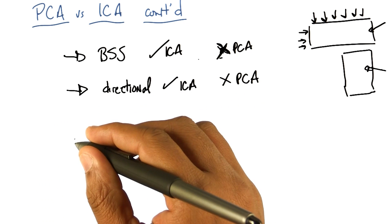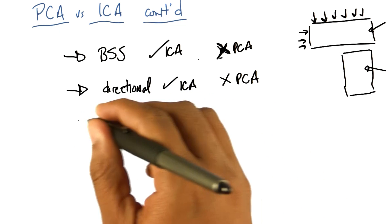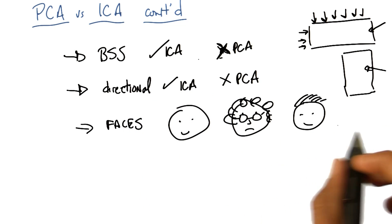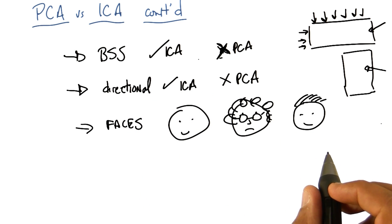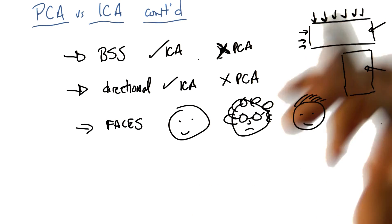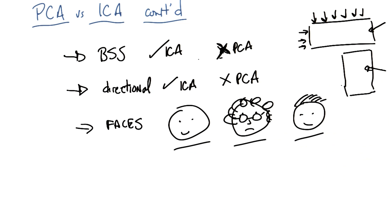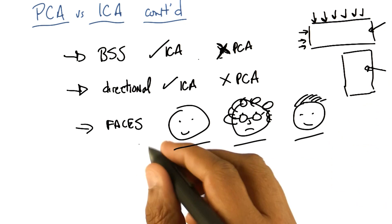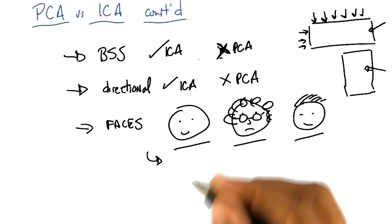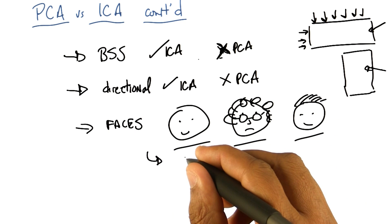So imagine you had a bunch of inputs of faces. Here's my input, faces. I give you bunches and bunches and bunches of faces. What do you think PCA would do? What do you think the first principal component of PCA would be over pictures of thousands and thousands of faces? Overall darkness of the image? Actually, that's exactly right. The first thing that PCA tends to do with images, we're talking pictures not just sketches here, is it finds the direction of maximal variance, and that tends to be brightness or luminance.